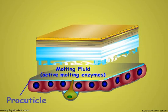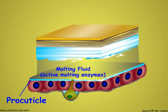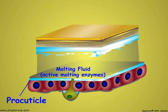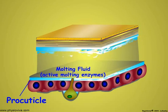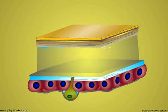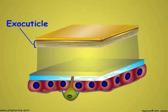As much as 90% of the chitin and protein breakdown products from the old endocuticle are reused by the epidermal cells to form a new procuticle. Digestion of the endocuticle continues until it reaches the old exocuticle. The old exocuticle layer is resistant to enzyme action since it is sclerotized.